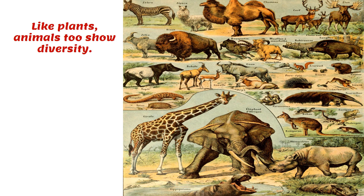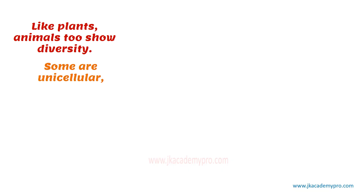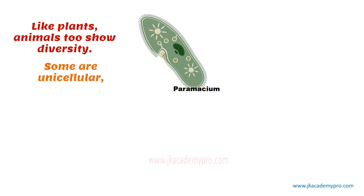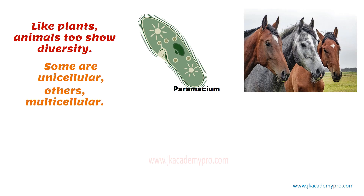There are different kinds of animals living on this earth. Some are unicellular, that is, with just a single cell. For example, paramecium. Others are multicellular, that is, with multiple cells in their bodies, just like most of the animals — and we humans too.